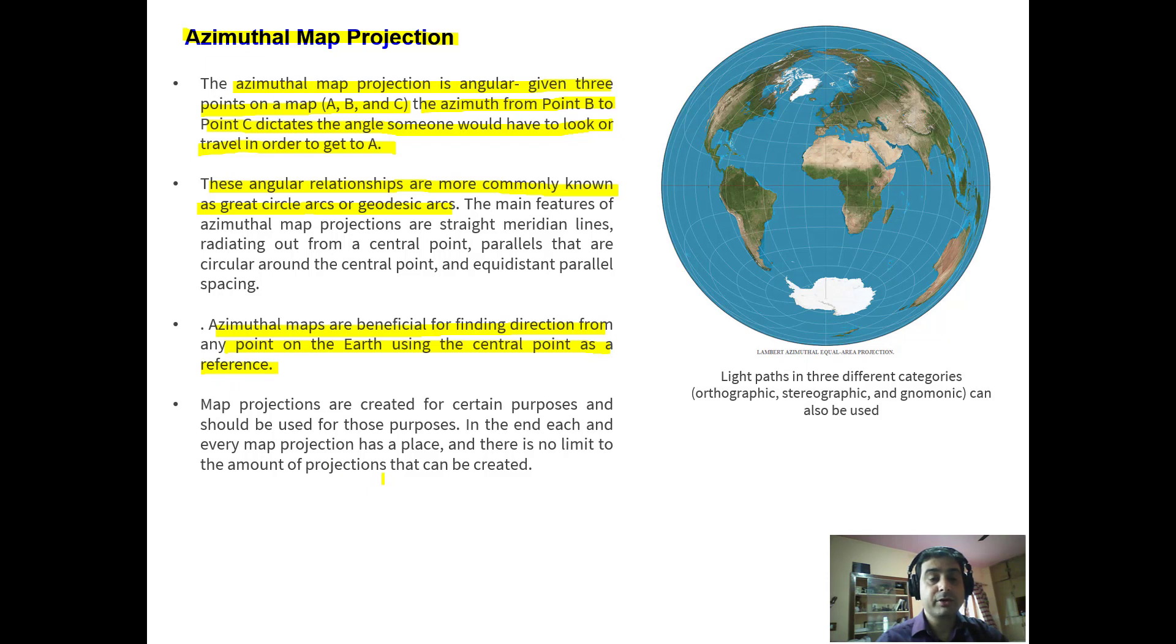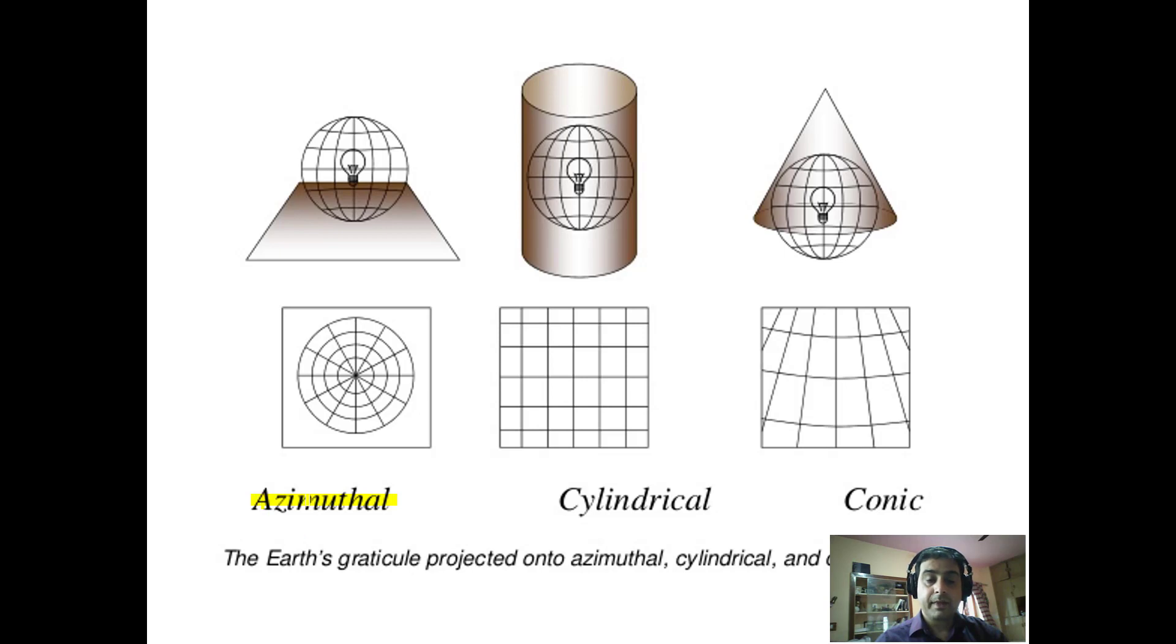These map projections are created for certain purposes and there is no limit to the amount of projections that can be created. We can have any number of projections. While choosing any projection, we have to keep in mind that the metric properties of the maps should be retained and should not be distorted. There should be minimum distortion and minimum errors. Depending upon the objective and the location on the globe, you can choose between a different set of projections. This is how the azimuthal, cylindrical and conical projections look and how they are brought into the 2D planes and how they look on the 2D planes.